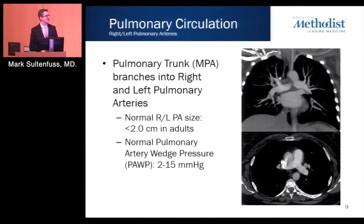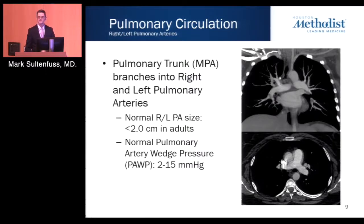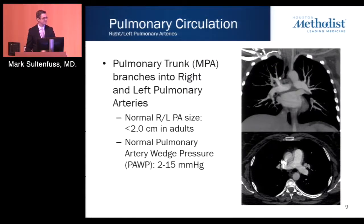The pulmonary trunk branches into right and left pulmonary arteries, with normal sizes less than 2 centimeters in adults. In chronic pulmonary thromboembolic hypertension, there may be asymmetric enlargement of the right or left pulmonary artery. Pulmonary artery wedge pressures should be in the 2 to 15 mmHg range. In cases of CTEPH or pulmonary hypertension, the pulmonary capillary wedge pressure may be difficult to obtain, so left ventricular end diastolic pressures may be needed to complete assessment.